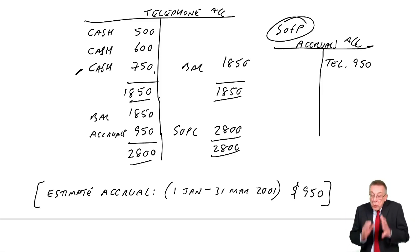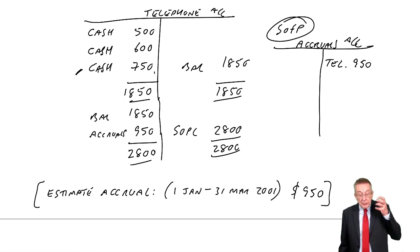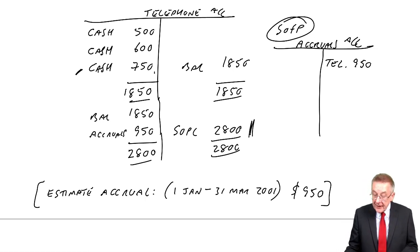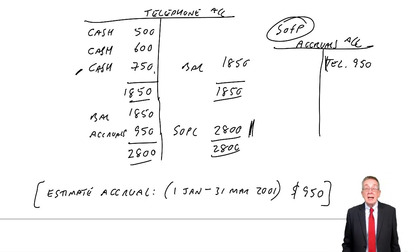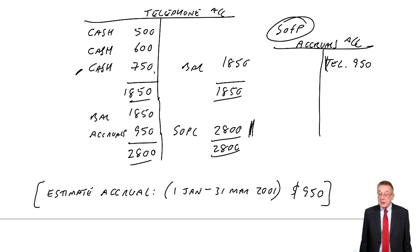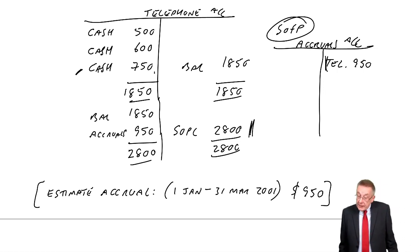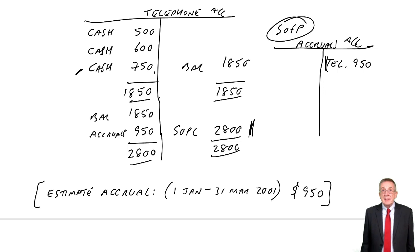So that one entry, debit expense, credit accruals, that one entry has given us the right expense for the year. It's given us the liability for the statement of financial position. All right, so there we are again. I hope that's straightforward. I think you can see the similarity to prepayments.